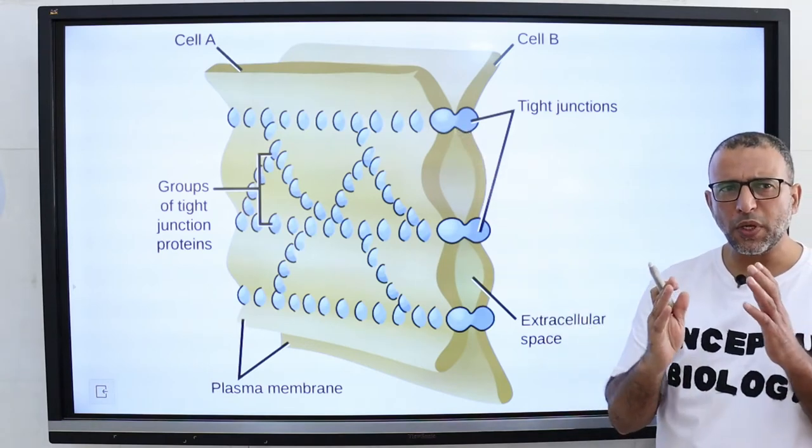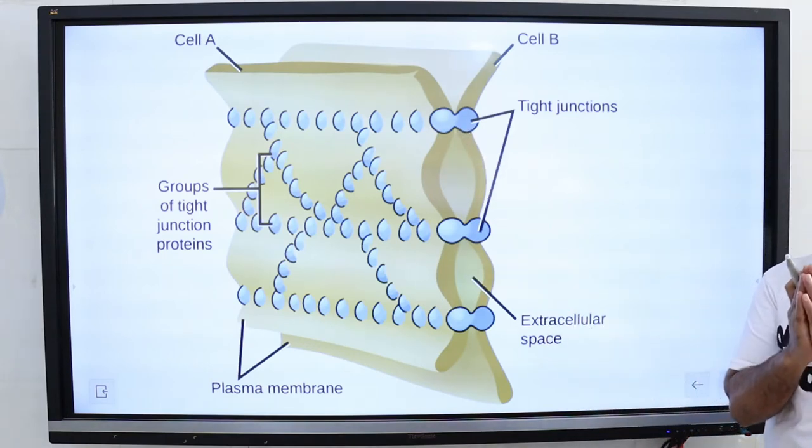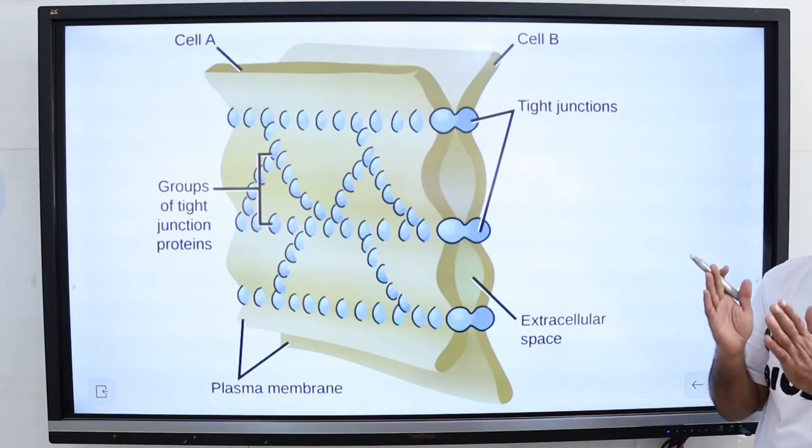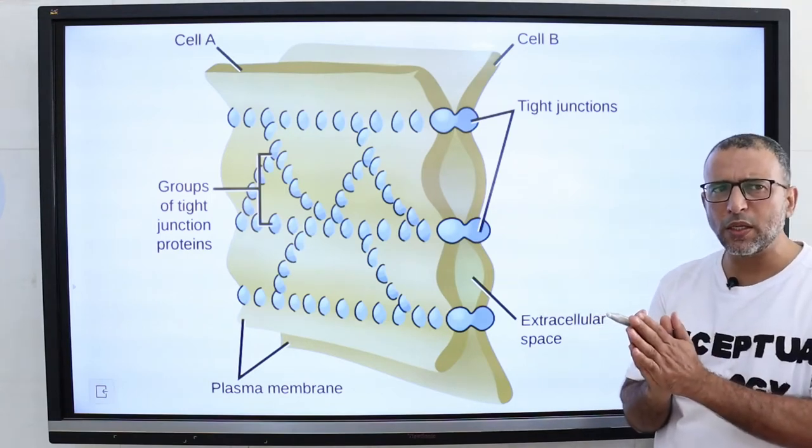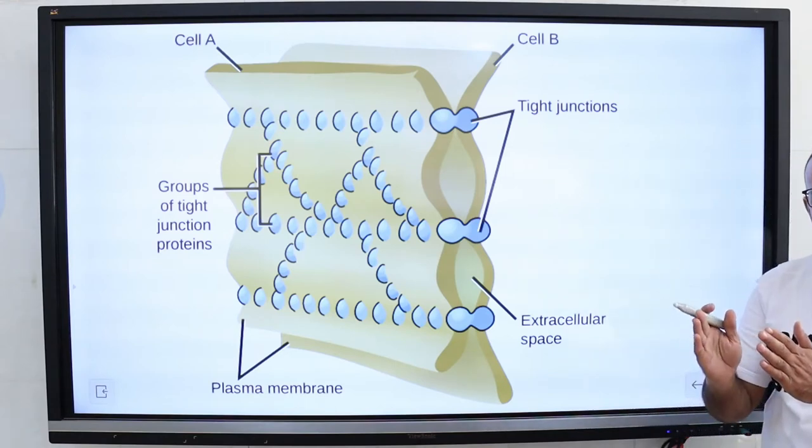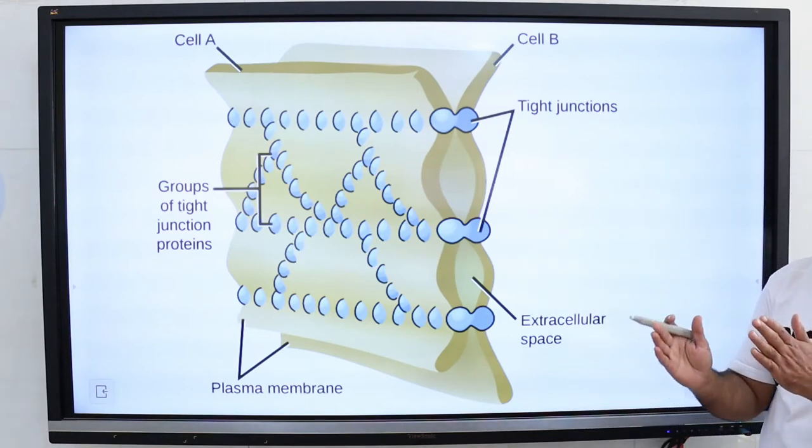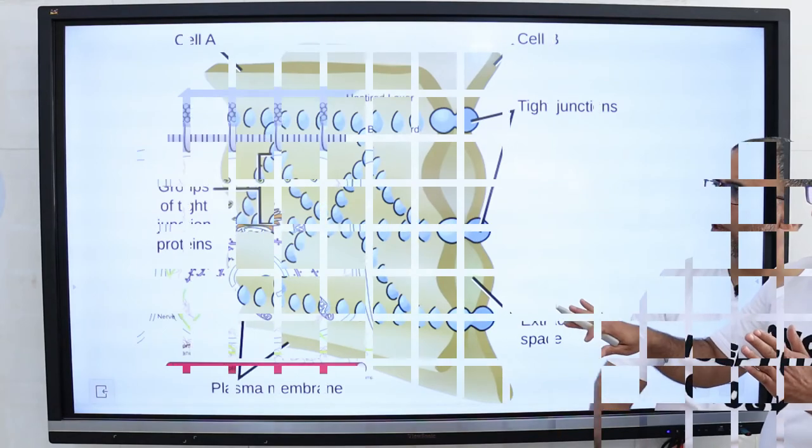Because of their ability to occlude or block substances from passing between cells, this form of junction acts as a wall within the tissue, keeping molecules on one side.